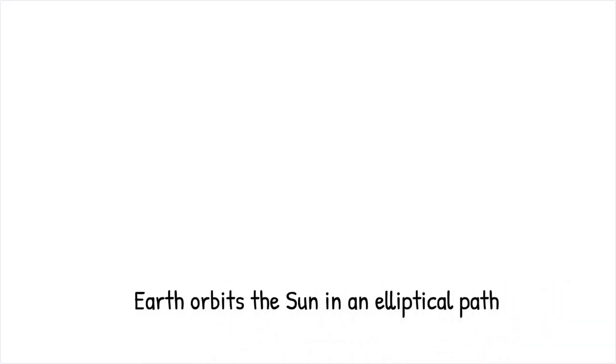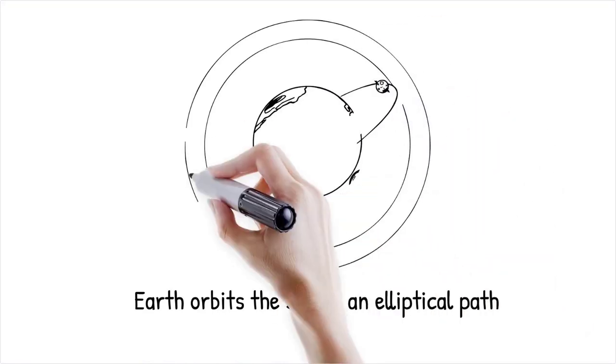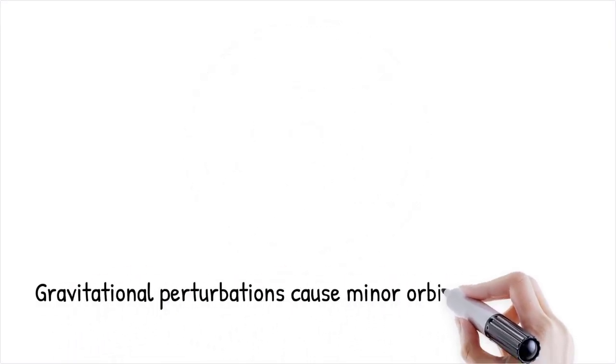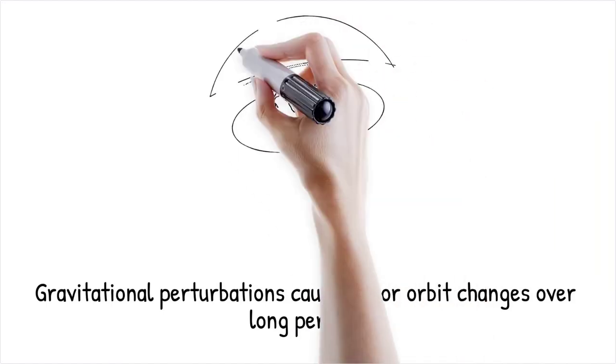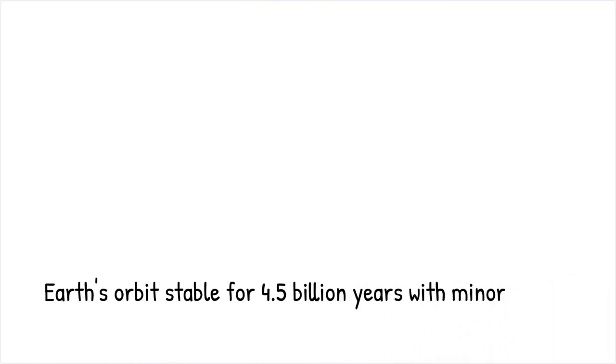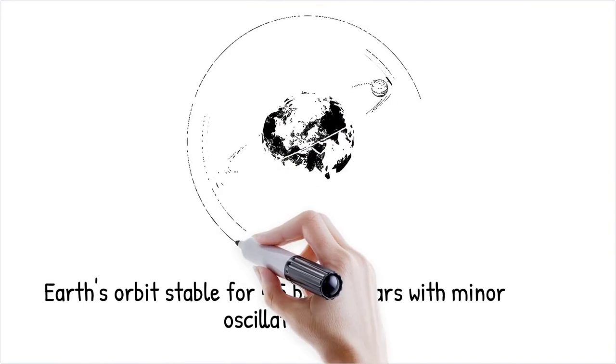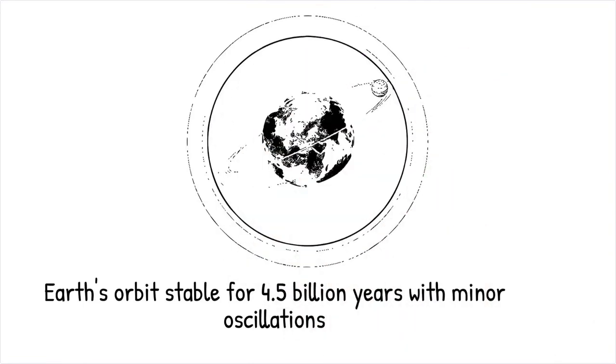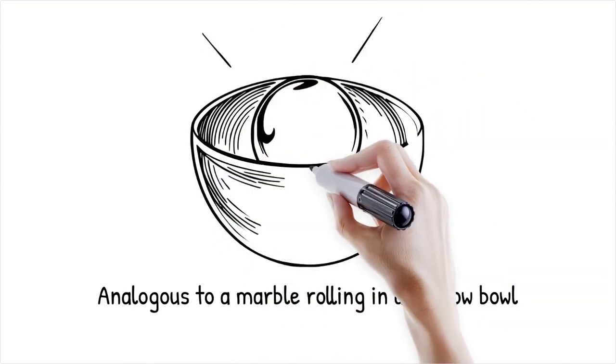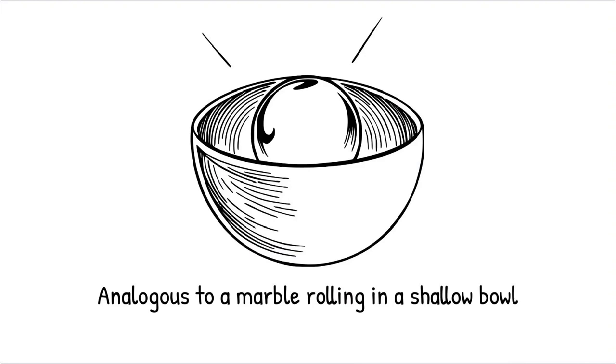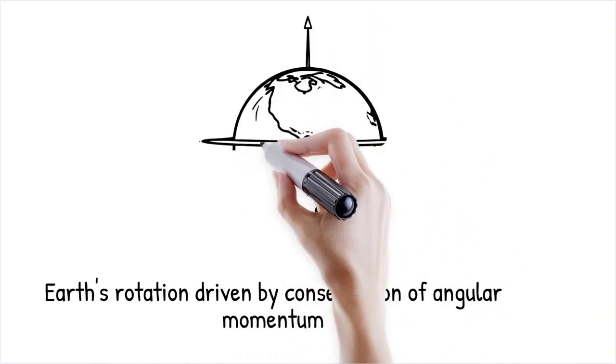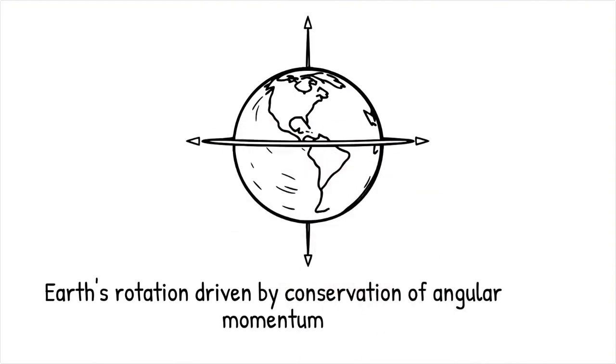Earth follows an elliptical orbit around the sun due to gravitational interactions with the sun at one of the foci of this orbit. The stability of this motion is governed by Newton's laws of motion and Kepler's laws, which describe how planets move in nearly constant orbits due to a balance between gravitational attraction and centrifugal force. Over long periods, gravitational perturbations from other planets and small energy exchanges with the sun slowly alter the orbit, but these changes are minuscule over human time scales. Astronomical simulations show that Earth's orbit has remained stable for over 4.5 billion years, with only minor oscillations in eccentricity and axial tilt due to interactions with Jupiter and Venus. This is similar to a marble rolling inside a shallow bowl. While small nudges may cause minor deviations, the overall motion remains stable unless a massive external force is applied.